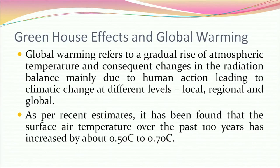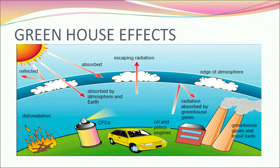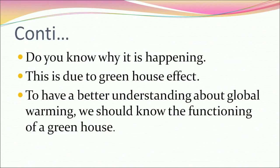Now let's talk about greenhouse effects and global warming. Global warming refers to a gradual rise of atmospheric temperature and consequent changes in the radiation balance, mainly due to human action, leading to climatic change at local, regional and global levels. As per recent estimates, the surface air temperature over the past 100 years has increased by about 0.5°C to 0.7°C. This is a picture of the greenhouse effect, particularly how greenhouse effects occur in cities. This is happening due to the greenhouse effect.